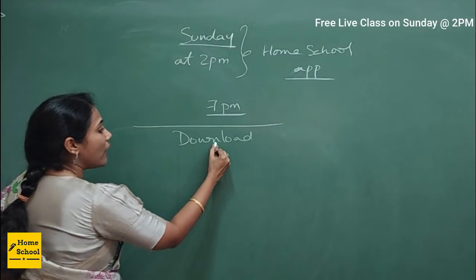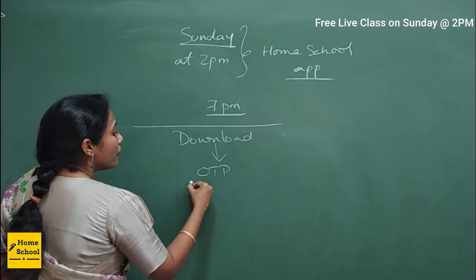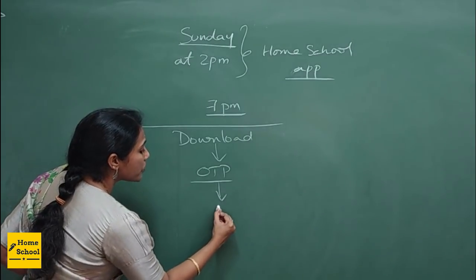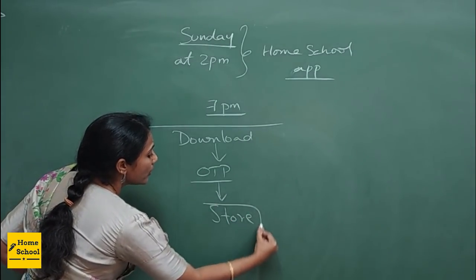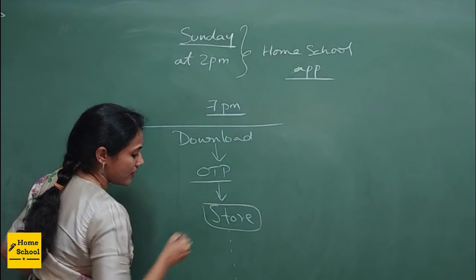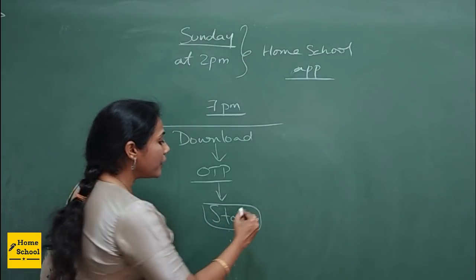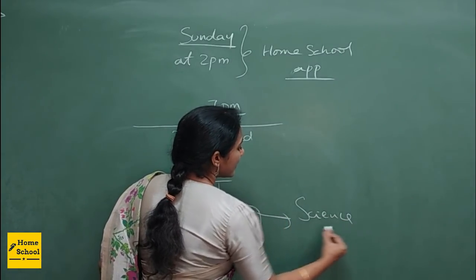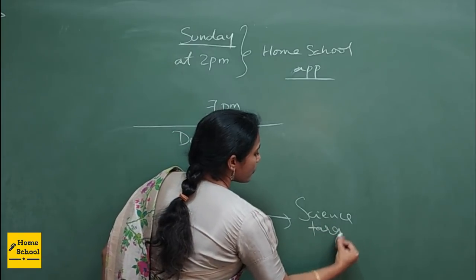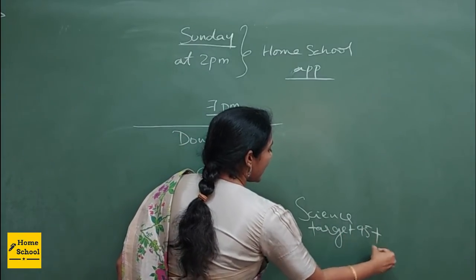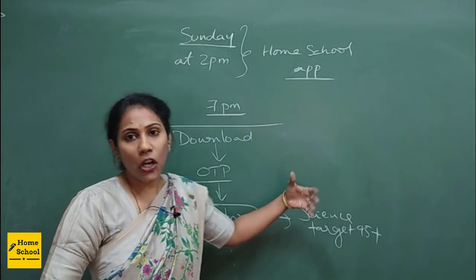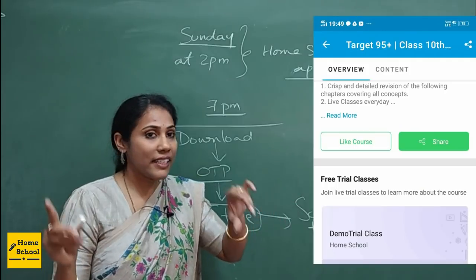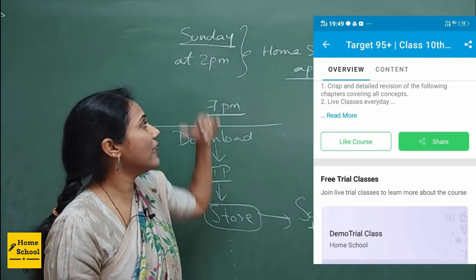Once you download, an OTP will come. From there, you can log into the app. Go to the option 'Store' — in the store, you have lots of courses. Go to the course called 'Science Target 95', then just scroll down and you can see the free live class scheduled on Sunday at 2 p.m.